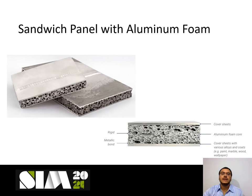The most simple type of sandwich panel consists of two thin, stiff, strong, high-density plates separated by a thick material which is far less stiff and strong. The image provides an example of a sandwich panel.